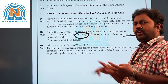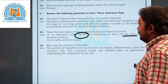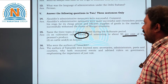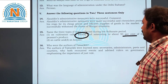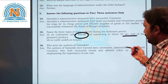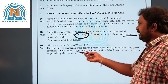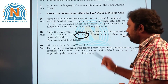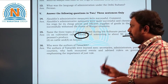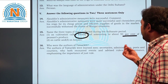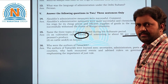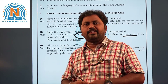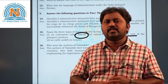Question sixteen: who were the authors of the Tawarikh? The authors were learned men — secretaries, administrators, poets, and courtiers — who recorded events and advised rules of governance, emphasizing the importance of just rule. These are the answers to question sixteen.